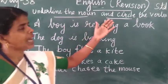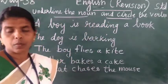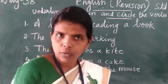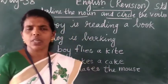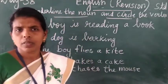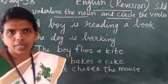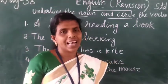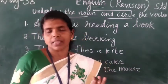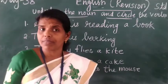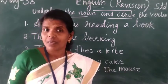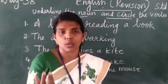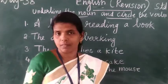Now underline the noun and circle the verbs. You already know noun and verb. Say, what are nouns? Naming words are called nouns. A noun is the name of a person, place, animal, or thing. And what are verbs? Action words are called verbs.